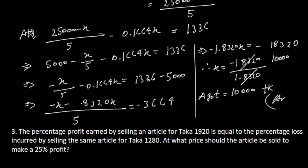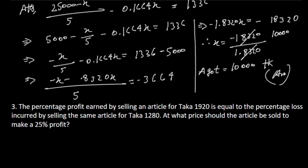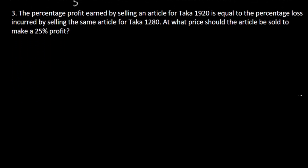A 20% loss is incurred by selling the same article for 1280. At what price should the article be sold to make a 25% profit?